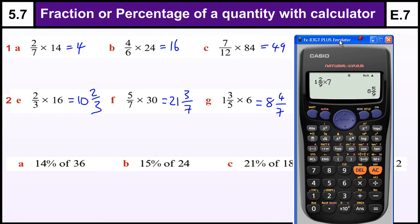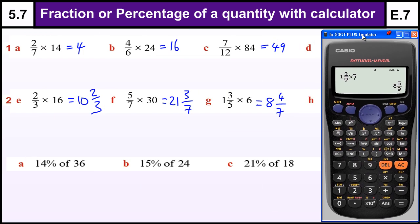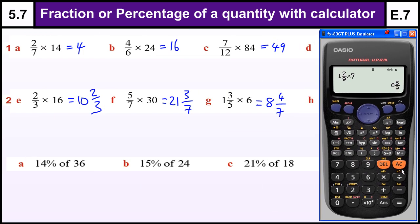Now percentages with a calculator. We do not use any percentage button on a calculator. That just leads to confusion because they all work in slightly different ways. So when we're doing a percentage, what we need to do is this: 14% of 36. So change the 14 into a decimal by dividing by 100, and then we times by 36.